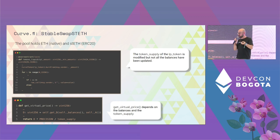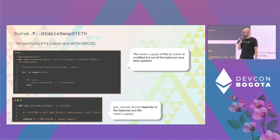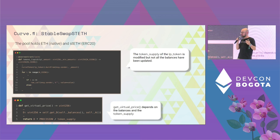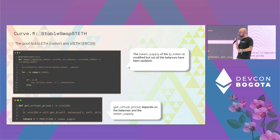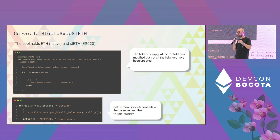Protocols usually read the state using the GetVirtualPrice function. The GetVirtualPrice depends on the D-factor, which depends on the balances. Remember, we have only updated the balance of the Ether, but not the balance of the staked Ether. It also depends on the token supply, and remember, we reduced the token supply. So what we have achieved here is that we essentially pumped the GetVirtualPrice.